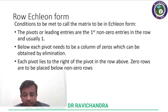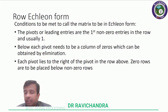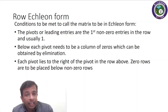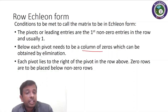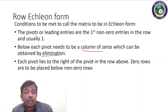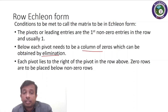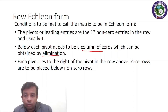That is the row echelon form of a matrix. As the conditions on the slides are put up, a matrix is said to be in echelon form if the pivots or leading elements are the first nonzero elements in the row, and usually they are one. Below each pivot, that is the leading entry, there needs to be a column of zeros, which can be obtained by elimination. Also, each pivot lies to the right of the pivot in the row above, and zero rows are to be placed below nonzero rows — that is, zero rows come at the bottom of the matrix.